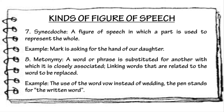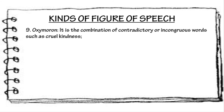We have oxymoron. Oxymoron is the combination of contradictory or incompatible words, such as 'cruel kindness.' In other words, it is the pairing of two words together that are opposing or contradictory. Example: Bittersweet. In the given example, it is already understood that the words bitter and sweet are both contradictory.